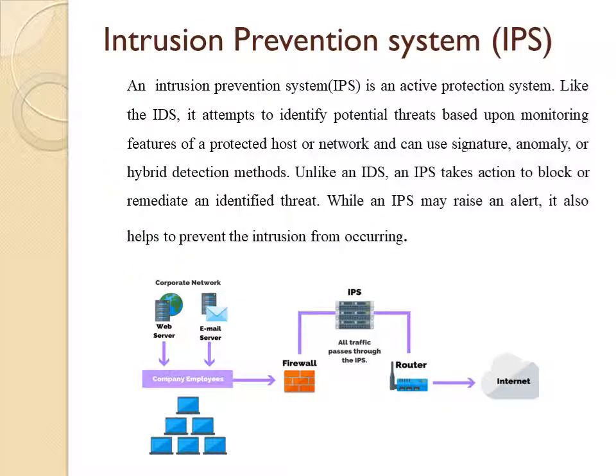The Intrusion Prevention System is an active protection system, like the IDS. It attempts to identify potential threats based upon monitoring the features of a protected host or network. The Intrusion Prevention System often sits directly behind a firewall, providing a complementary layer of analysis that negatively selects for dangerous content. Unlike the IDS, which is a passive system that scans traffic and reports back on threats, the IPS is placed inline in the communication path between source and destination, actively analyzing and taking automated action on all traffic flow entering the network.